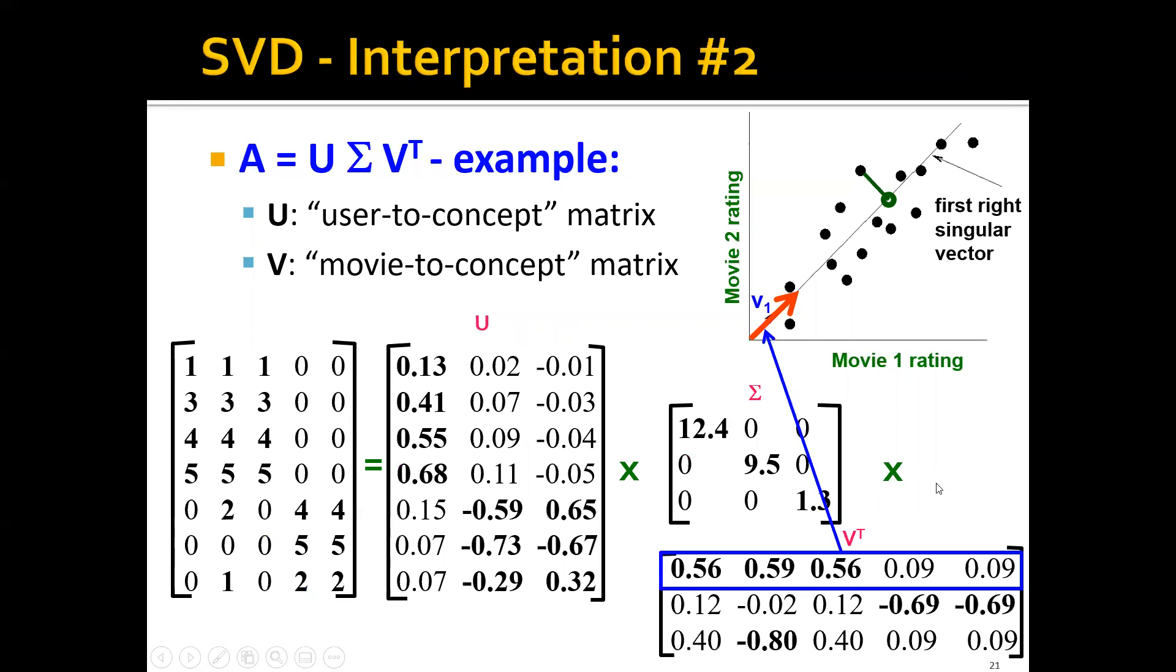If we look at our previous example, the previous user movie matrix example where we factorize the input matrix, this is the rating matrix. We factorize it into three matrices: U, sigma, and V. U is the user to concept matrix, V is the movie to concept matrix. Correspondingly, the optimal V1 happens to be the first right singular vector of this SVD, which is here.